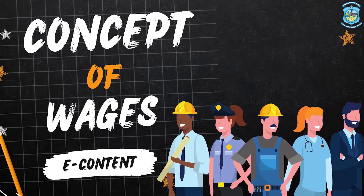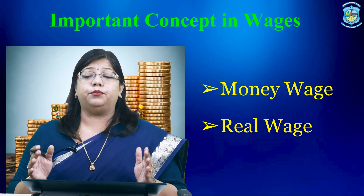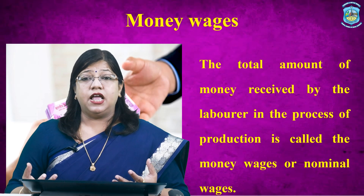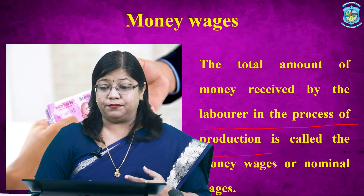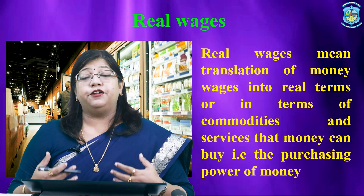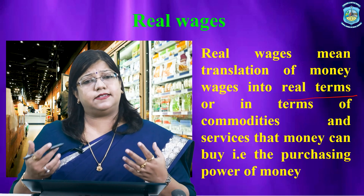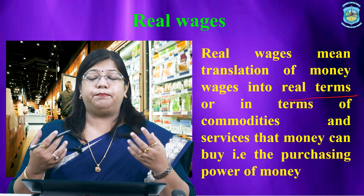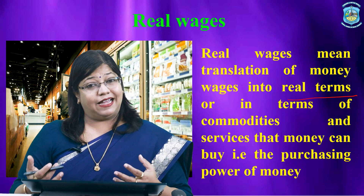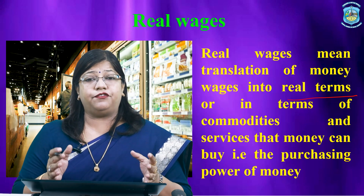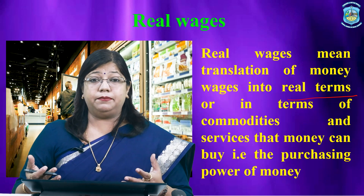Dear learners, let us discuss the two main concepts of wages: money wages, or nominal wages, and real wages. Money wages are the total amount of money received by the labour in the process of production. Real wages means the translation of money wages in real terms, or in terms of commodities and services that money can buy — that is, the purchasing power of money. They refer to the advantages of a worker's occupation: the amount of necessities, comforts, and luxuries of life which the worker can command in return for his services. Higher the purchasing power of money, higher will be the real wages; lower the purchasing power of money, lower will be the real wages.